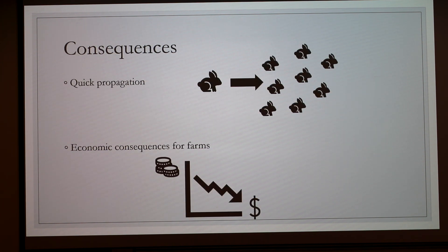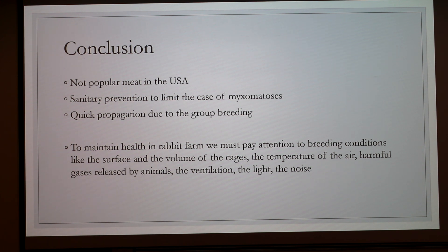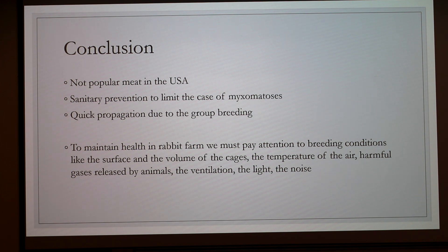Consequences on the farm: there is a quick propagation of myxoma virus, so all the livestock can be affected. There are economic consequences because rabbits will die and you can't sell them if they die from a disease. In conclusion, rabbit meat isn't popular in the U.S., partly because rabbits are pets, and also because of diseases like rabbit fever and rabbit starvation. A case of myxomatosis in a rabbit farm can lead to bankruptcy because it is a disease with rapid propagation due to group breeding.